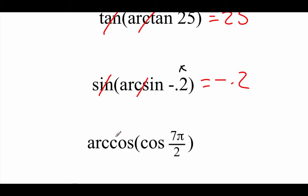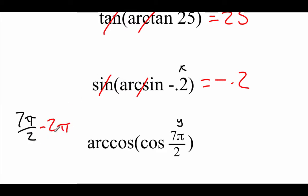With our last example, we've got an arc cosine of the cosine of 7π/2. Now this represents a y value, and we said those y values had to be between 0 and π. This 7π/2 is not between 0 and π, so we need to make a couple of changes. I'm going to subtract off a rotation — I'll take 7π/2 and subtract off a 2π rotation. Using common denominators, that's 4π/2, and carrying out the subtraction we get 3π/2. So I'm going to replace this 7π/2 with that 3π/2.